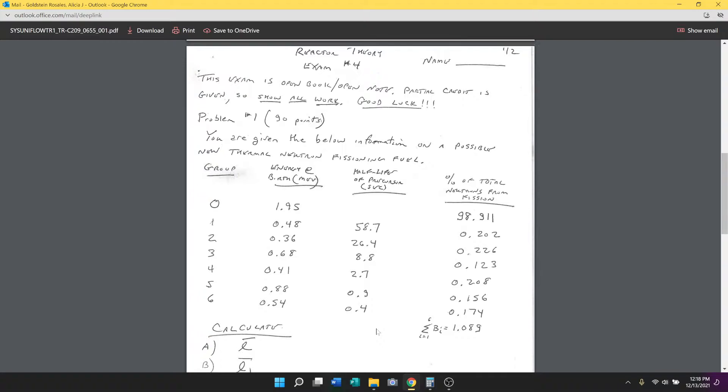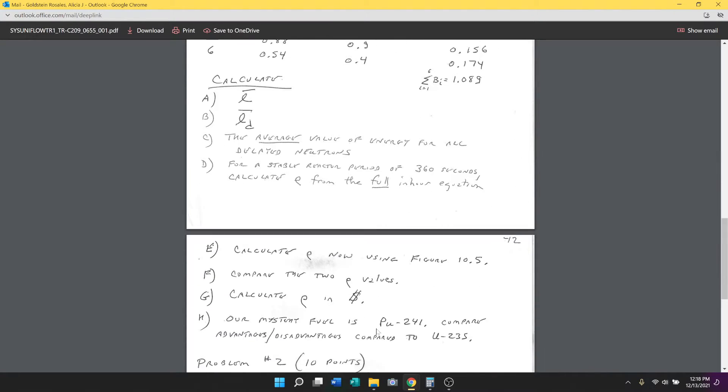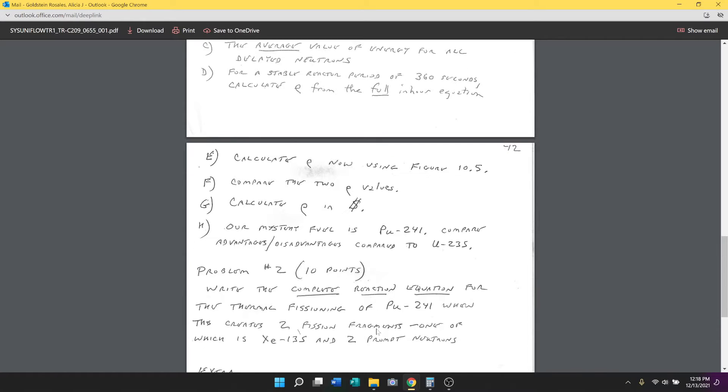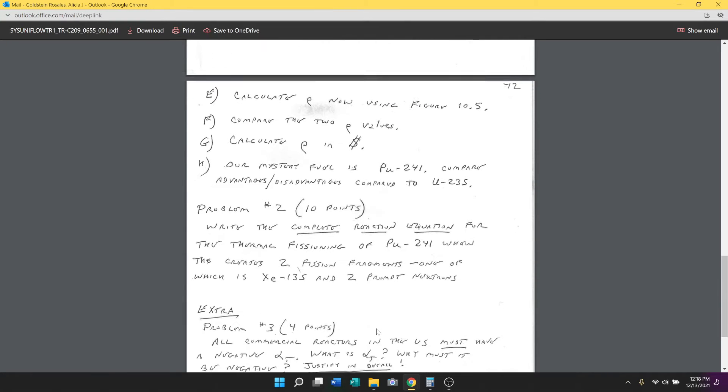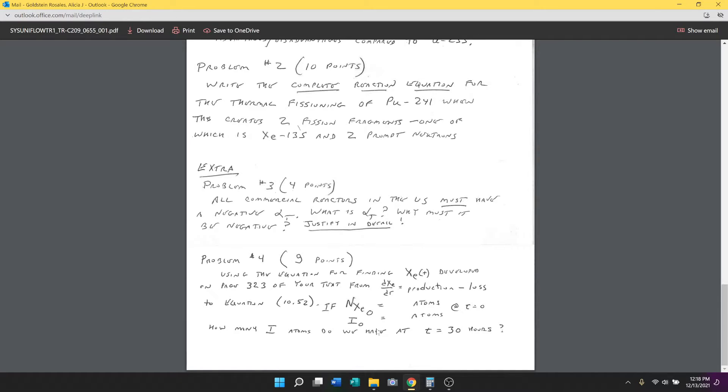For extra credit, I want you to tell me about alpha sub T, exactly what it is, why it has to be negative, and I expect that to be a little bit more detailed than what you did on the quiz. That's worth four points. Then for nine points, because this is a little bit more difficult...